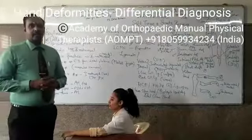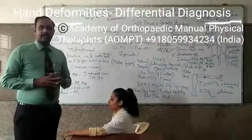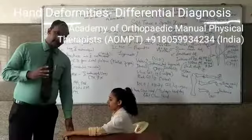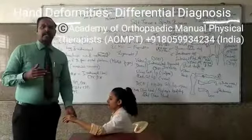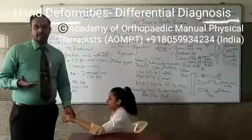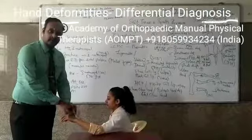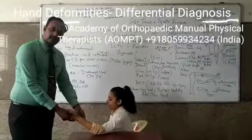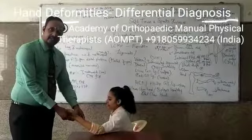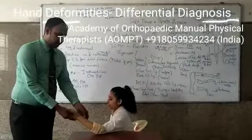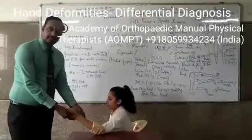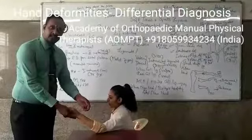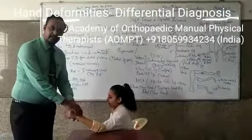Whenever we are observing the wrist and hand for deformities, remember that deformity gives an idea of the underlying disorders. When it comes to wrist and hand, Colles fracture involves the distal radius, which can either be the volar displacement or the Smith fracture, which is the dorsal displacement of the distal end of the radius.